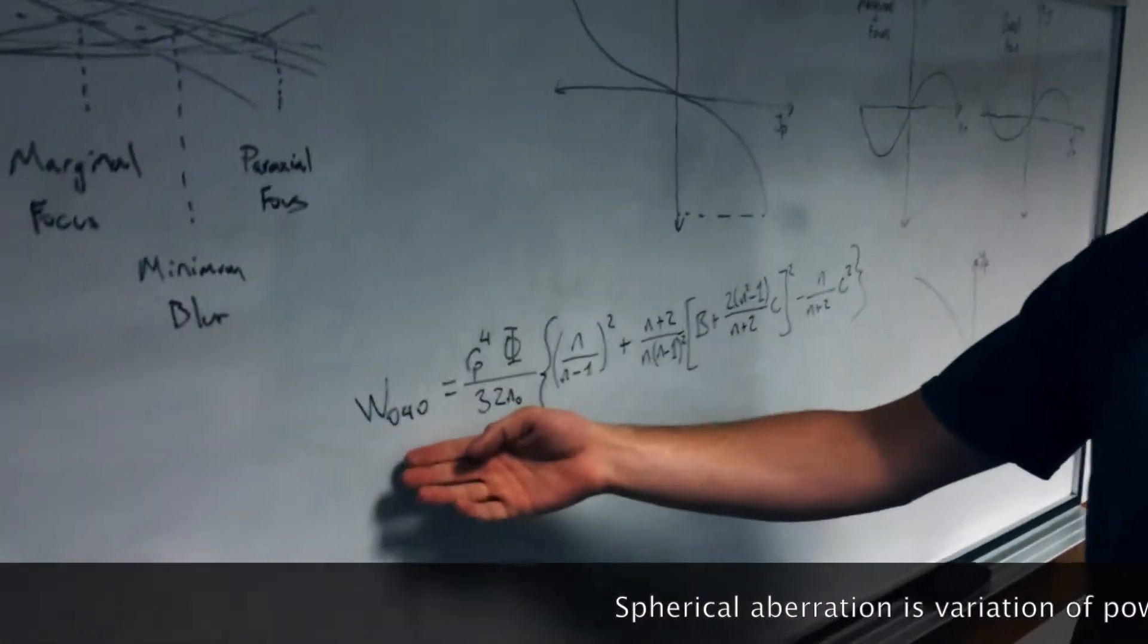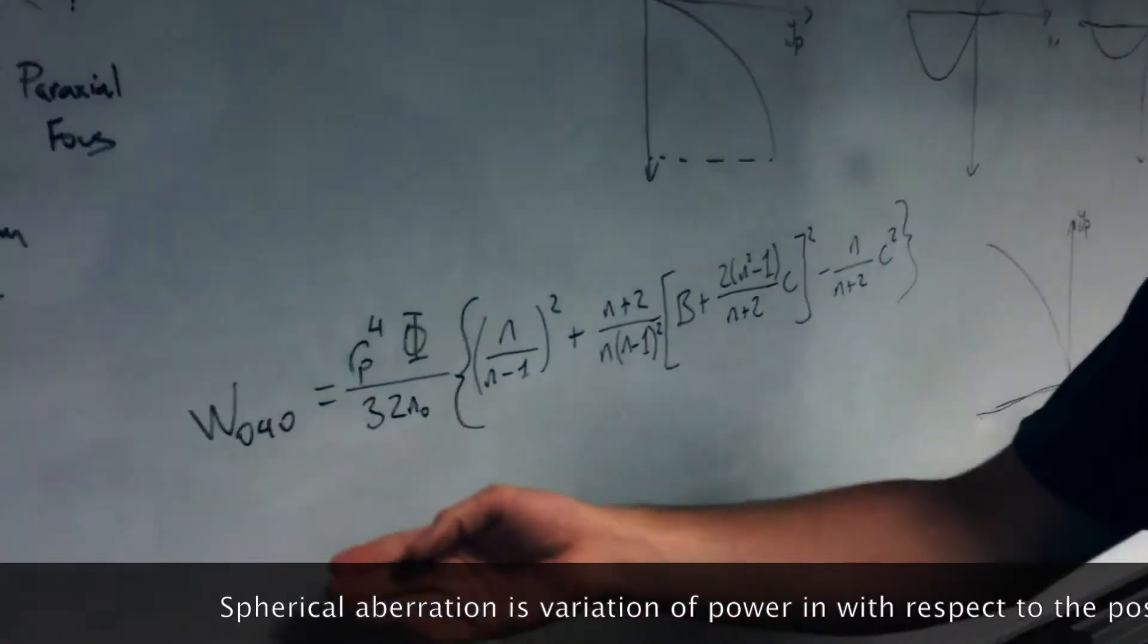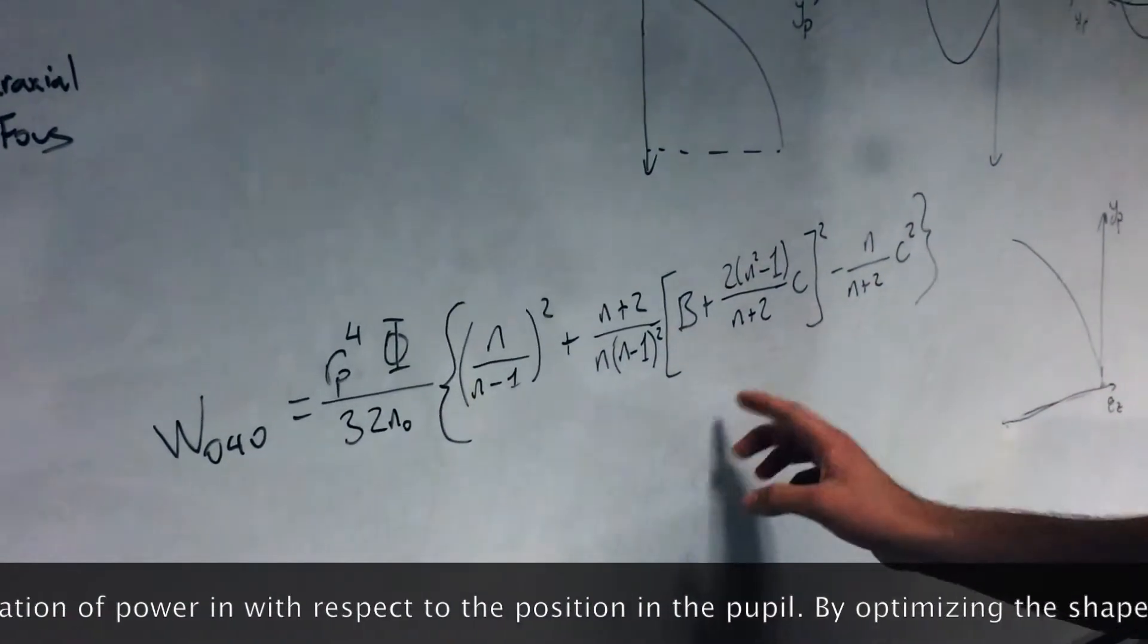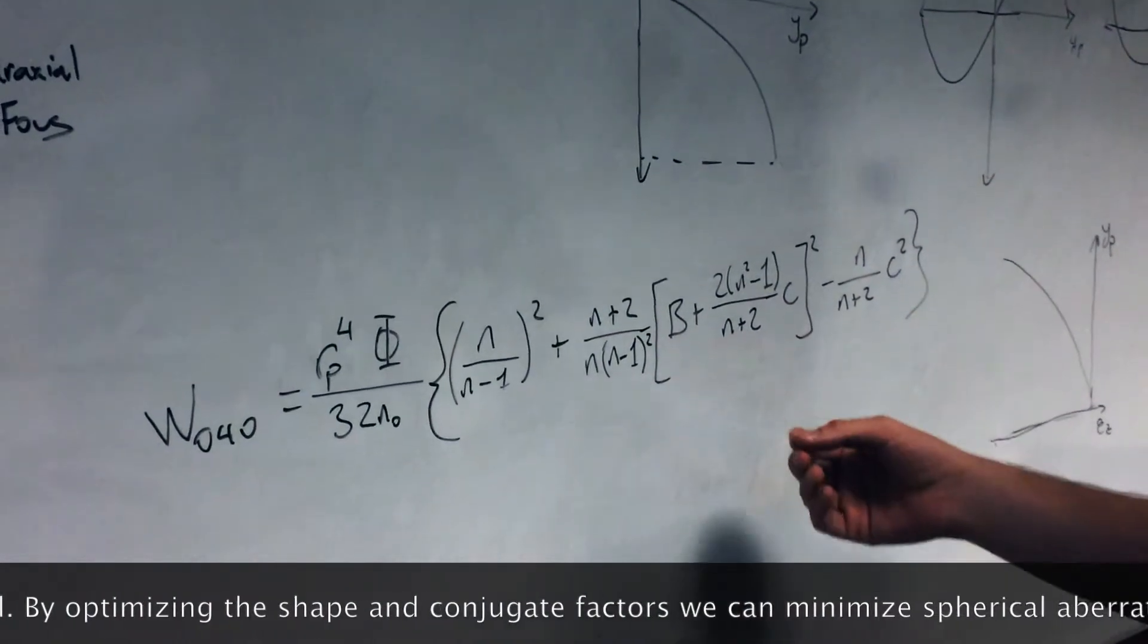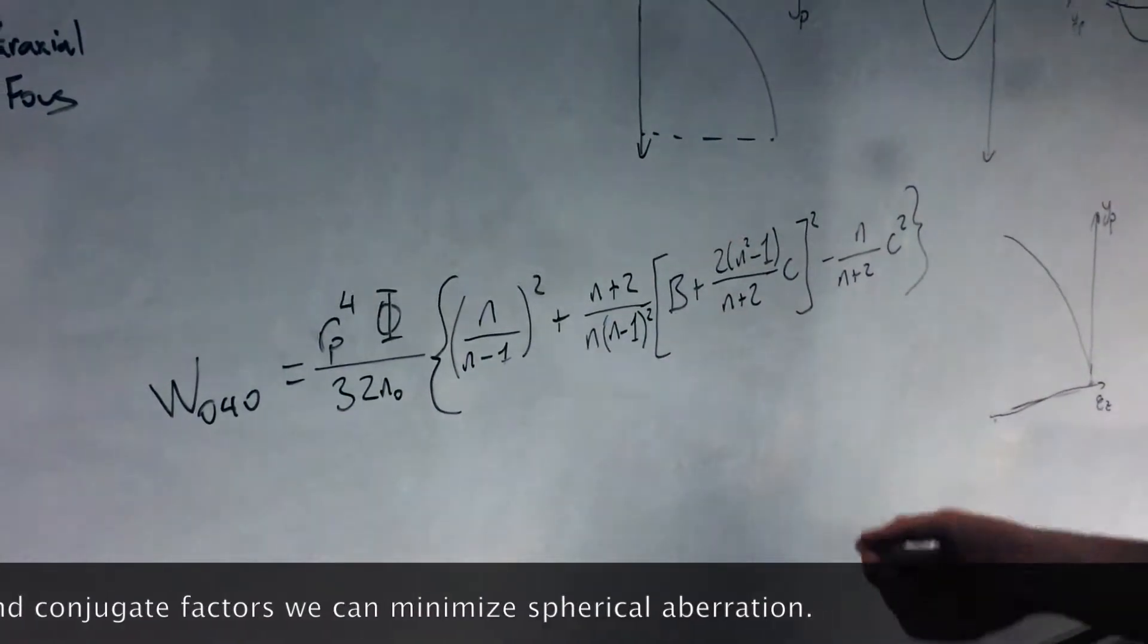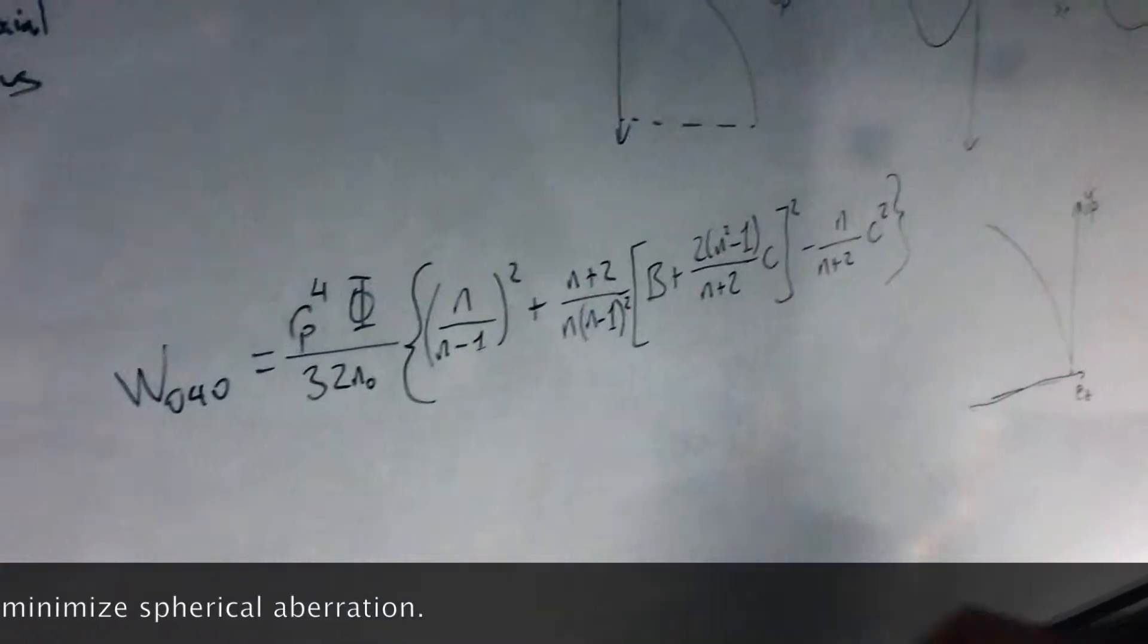Now the equation for spherical aberration is this big equation here, but the most important part is the shape factor and the conjugate factor, which depends on how the lens is shaped and where the object and image locations are.